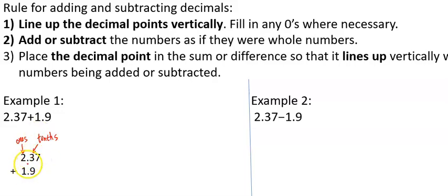So if we line up the decimal point, one place to the right of the decimal point is the tenths. So we're adding 3 tenths and 9 tenths. Now we have the 7, which is hundredths.